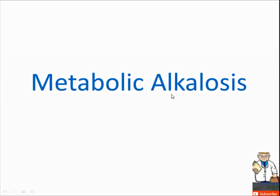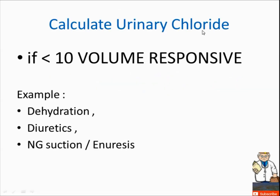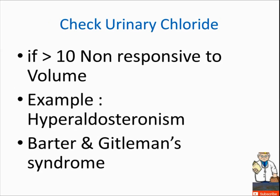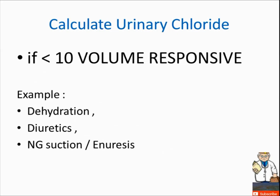The next topic is metabolic alkalosis, focusing on a high-yield concept. When we calculate urinary chloride to check whether a condition is volume responsive or not, if we get less than 10, we consider it volume responsive. Examples include dehydration, diuretic use, NG suction, and emesis.